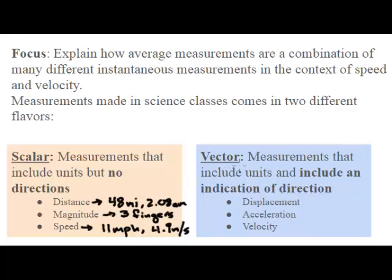But vectors, on the other hand, are measurements that include a unit and also include an indication of direction. And so for example, displacement is almost exactly the same as distance except you include one thing, a direction. So for example, 2.08 centimeters, and then I include an arrow telling people what direction we're traveling in.